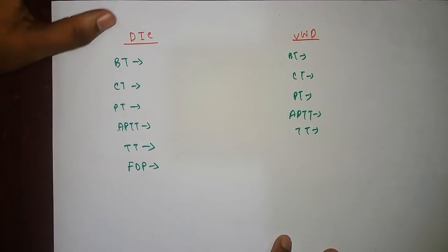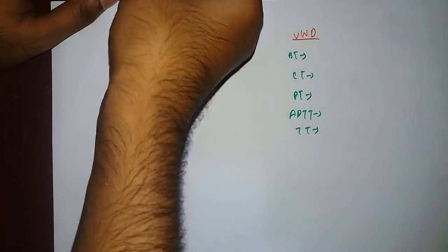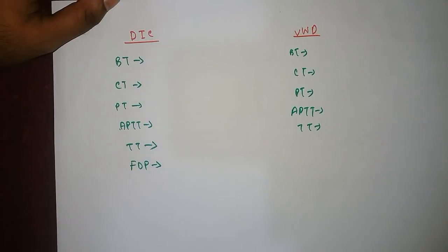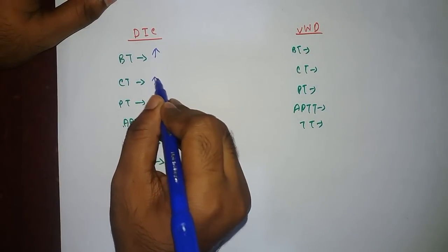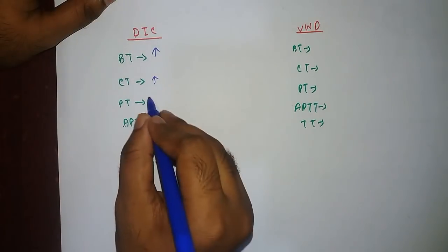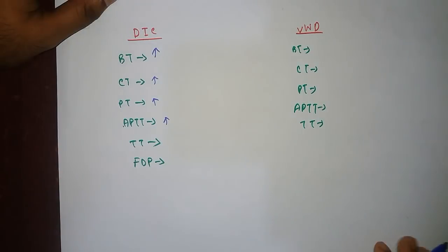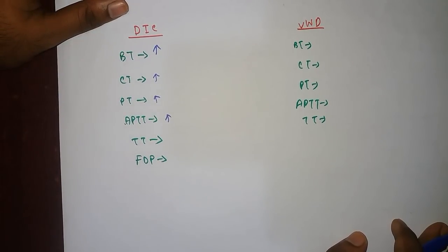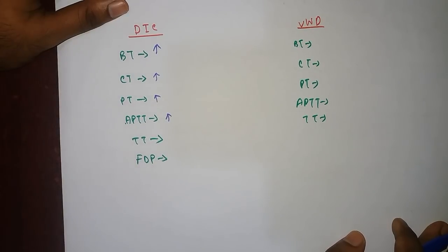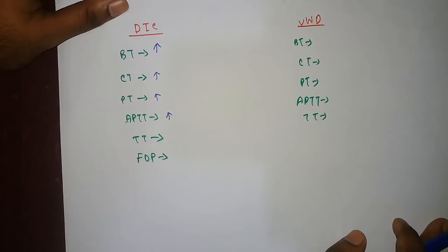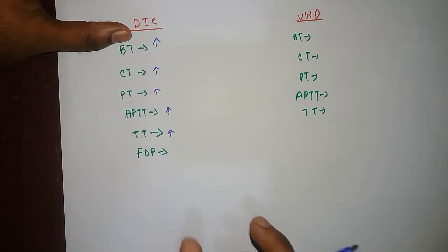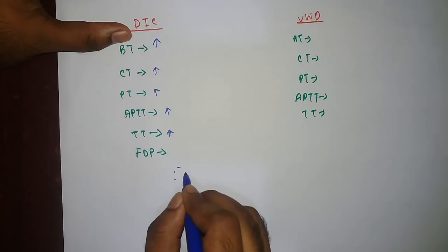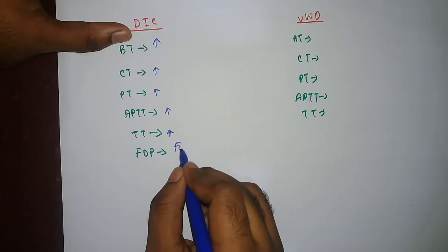Here is a test: in DIC — disseminated intravascular coagulation — both platelets and clotting factors are consumed. If platelets are consumed, bleeding time increases. If clotting factors are consumed, clotting time increases. Since clotting factors include both the extrinsic and intrinsic pathways, both prothrombin time and activated partial thromboplastin time will also increase. Additionally, in DIC many clots form and consume fibrinogen, so there is deficiency of fibrinogen, meaning thrombin time also increases. The consumed fibrinogen is further cleaved by plasminogen, producing fibrin degradation products — which would not normally be found in other cases.